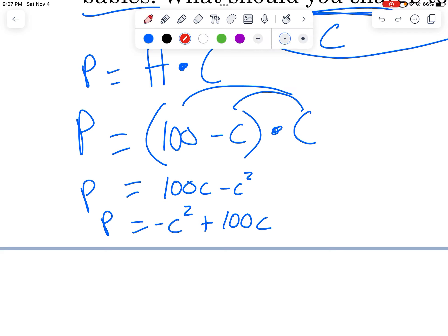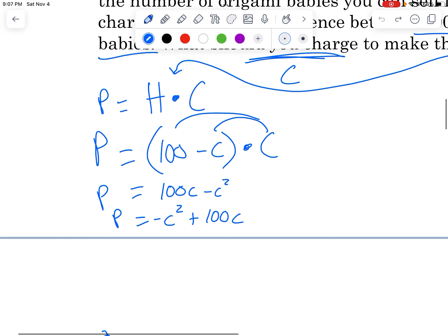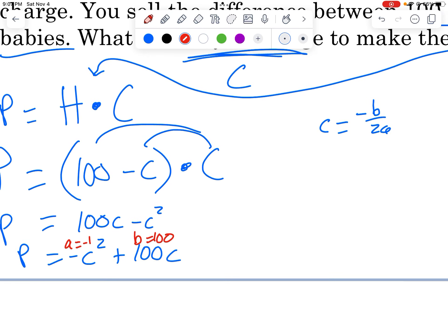And now we just need to identify our A value and our B value. And we can get the C value. C is going to equal negative B over 2a. So let's get those values. Here there's the A value, and we've got A is negative 1. There's an invisible one in front of C squared. And then here is our B value. It's a positive 100, so B equals 100. And so we can plug those numbers in. C equals negative 100 over 2 times negative 1. And we do some simplifying. Negative 100 over negative 2. C comes out to be 50.